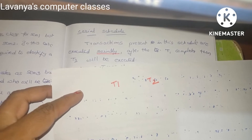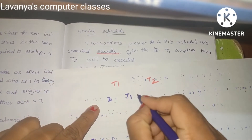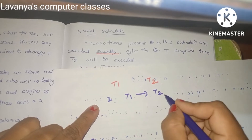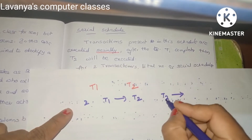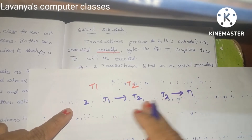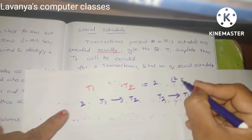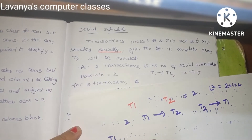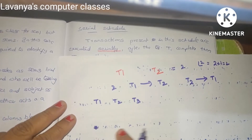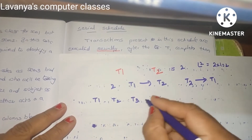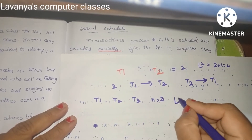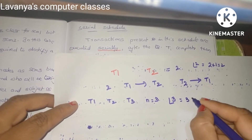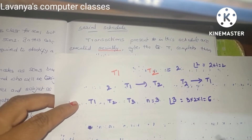There are two possible ways: either T1 then T2 (first complete T1, then start T2), or start T2 and after completion of T2 then start T1. If we have three transactions T1, T2, T3, then the number of possible serial schedules is factorial 3 — that is 3 × 2 × 1 = 6 ways.